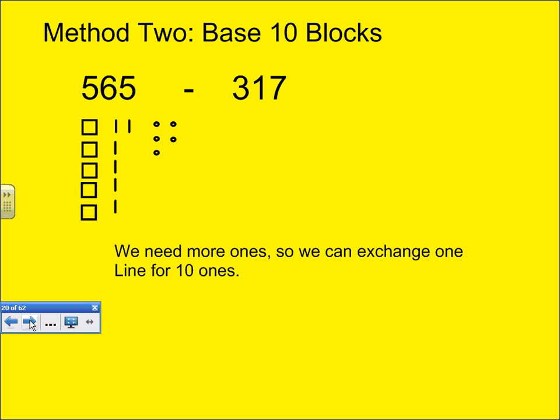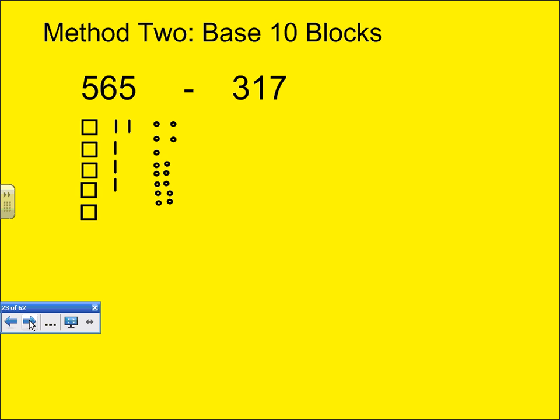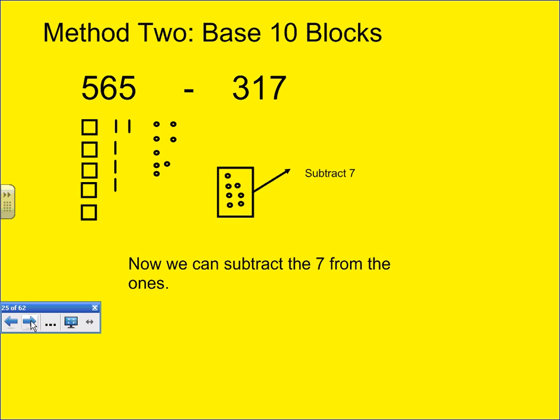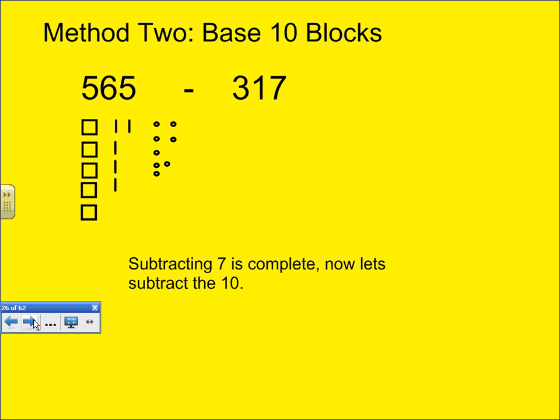So, we can exchange one line for 10 ones. I'm going to take one of the 10 lines, and I'm going to exchange it for 10 ones, and put those 10 ones in the ones place. Now, I have enough to remove 7. And they go away. Now, the ones have been subtracted.